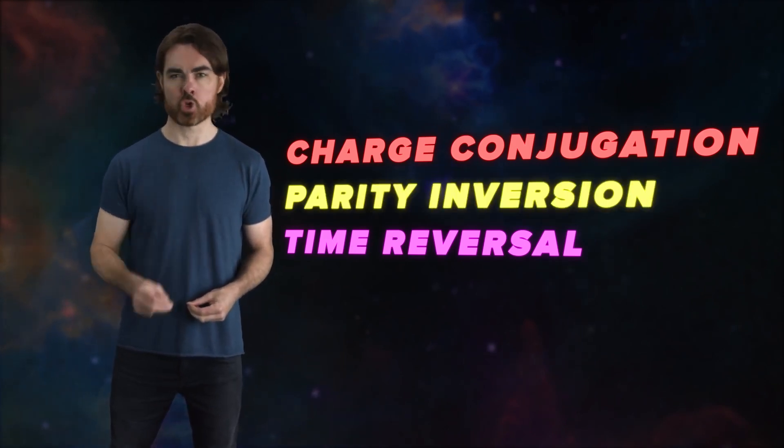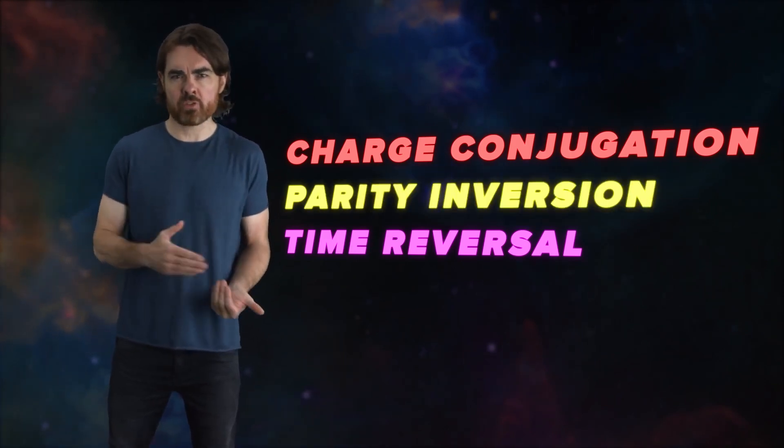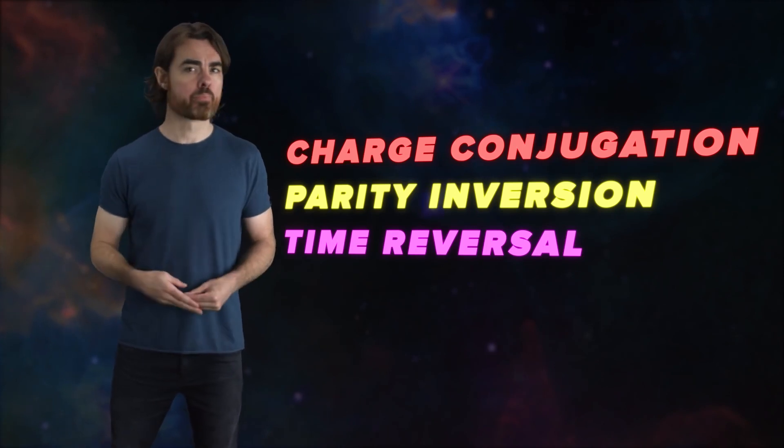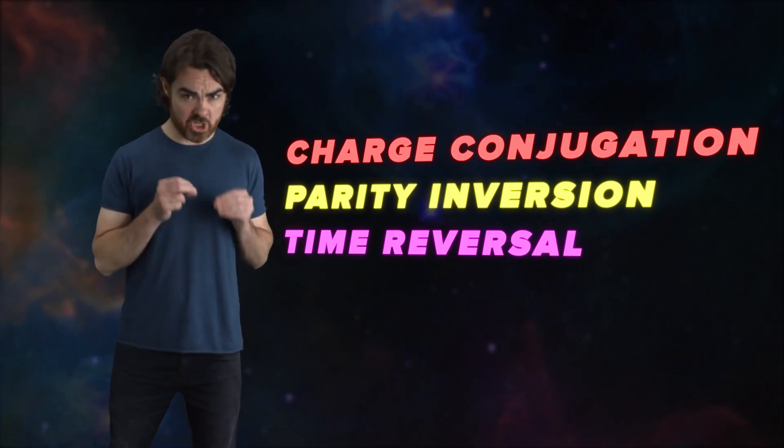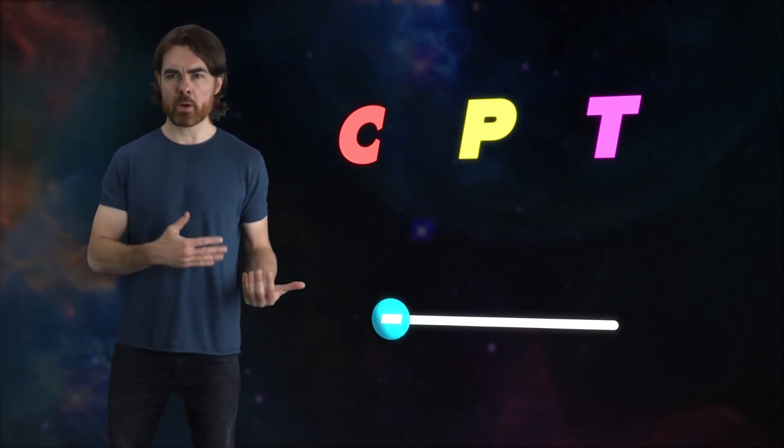P is parity inversion, which can be thought of as reflecting the particle like in a mirror. So if you make all of these changes at the same time—flip the charge, invert the parity, reverse time—a particle should end up back where it started.